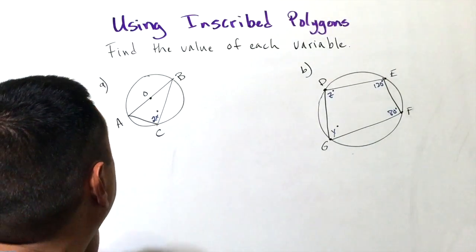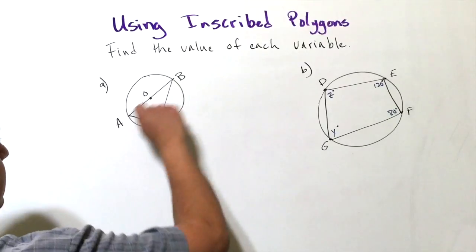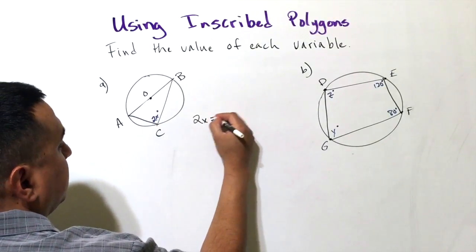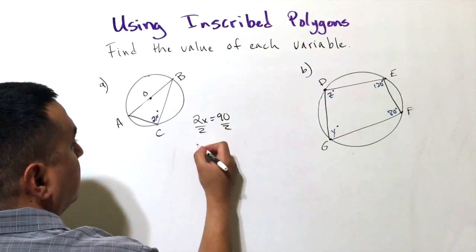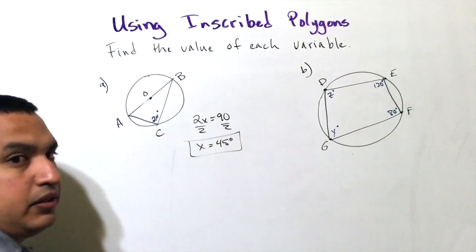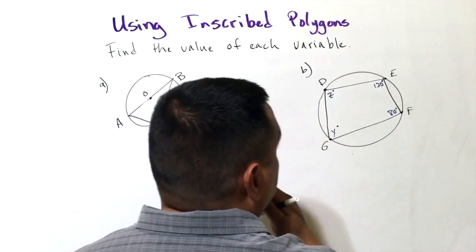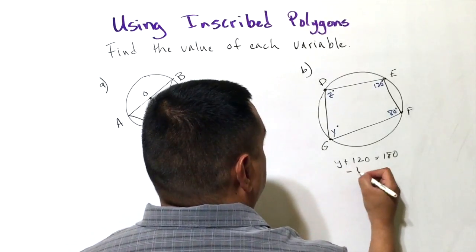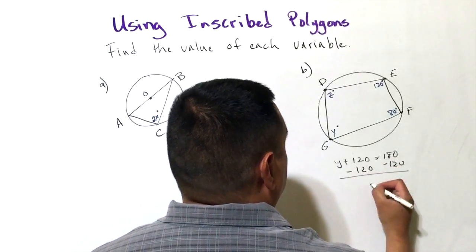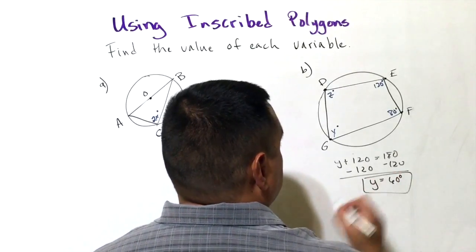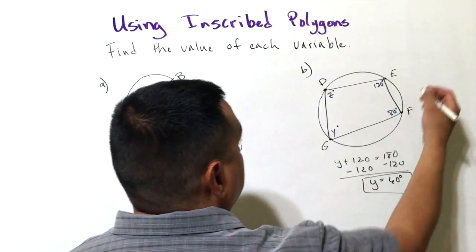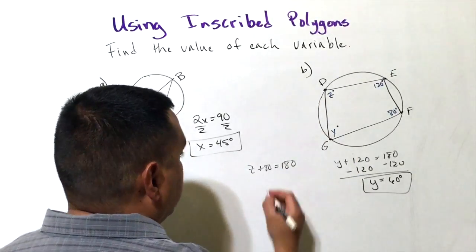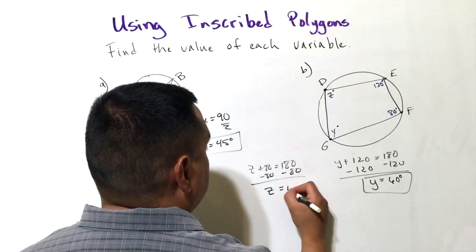For example A, AB is a diameter through center O, so angle C must be 90 degrees. Setting 2x = 90 and dividing by 2 gives x = 45 degrees. For part B, it's an inscribed quadrilateral, so opposite angles are supplementary: y plus 120 equals 180, giving y = 60 degrees. For z, z plus 80 equals 180, so z = 100 degrees.